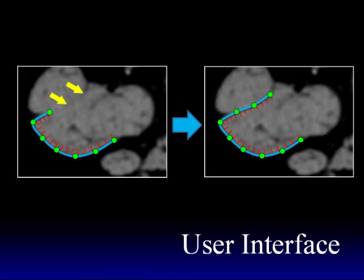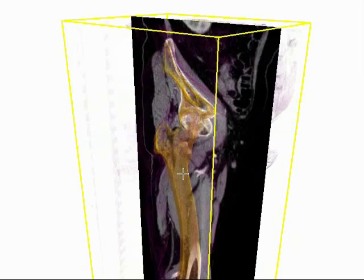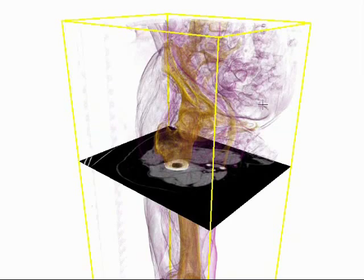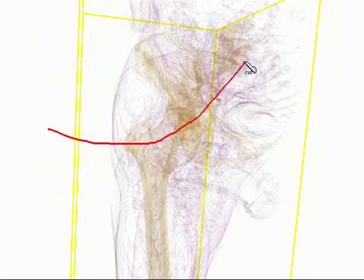We propose a contour-based interface for intuitive volume segmentation. The user first places a cross section by selecting and moving orthogonal planes. The user can also place a curved cross section by drawing a stroke.